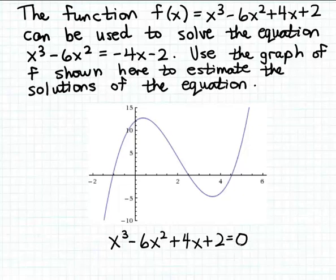So if I can solve the equation set equal to zero, I know the solutions to the original equation. Now let's imagine a function — I'm going to call it F — whose formula is the same as the expression on the left-hand side. So function F has the formula x cubed minus 6x squared plus 4x plus 2.